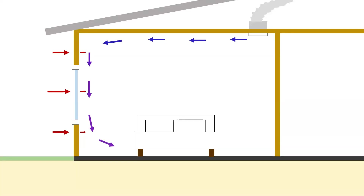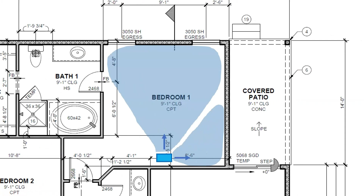Supply grills have a few metrics to their performance: spread and throw. The spread is the horizontal angle at which the air comes out of the grill. The throw is the distance the air will travel away from the grill. Most manufacturers will provide this information, since it's important for choosing the correct size grill. Let's look at an example.